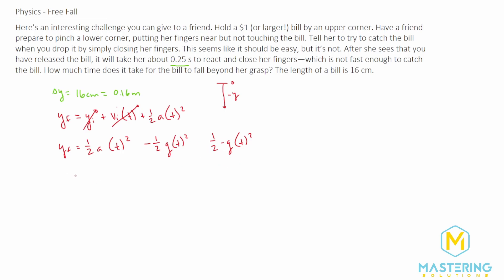Now we need to solve for time. To isolate time, we divide both sides by negative one half g, or one half negative g. So now we have time squared equals delta y over one half negative g.